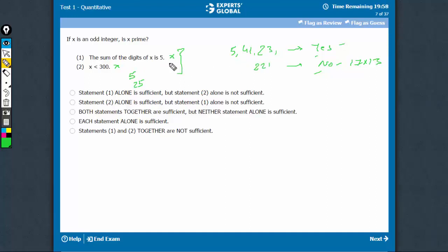5, 41, 23, still these cases are all less than 300, we are getting the answer as yes. In this particular case, we are getting the answer as no. So even after combining, there isn't much help and the answer becomes option E, the question cannot be answered. Thank you.